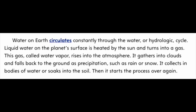Water on Earth circulates constantly through the water, or hydrologic, cycle. Liquid water on the planet's surface is heated by the sun and turns into a gas. This gas, called water vapor, rises into the atmosphere. It gathers into clouds and falls back to the ground as precipitation, such as rain or snow. It collects in bodies of water or soaks into the soil, then starts the process all over again.